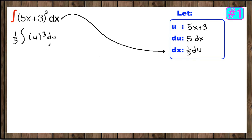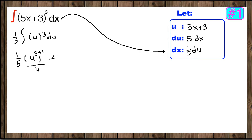Now we know how to take the anti-derivative of u cubed. The anti-derivative of u cubed is found by adding 1 to the power and dividing by the new power. So 3 plus 1 is 4, giving us u to the 4th over 4, plus c.